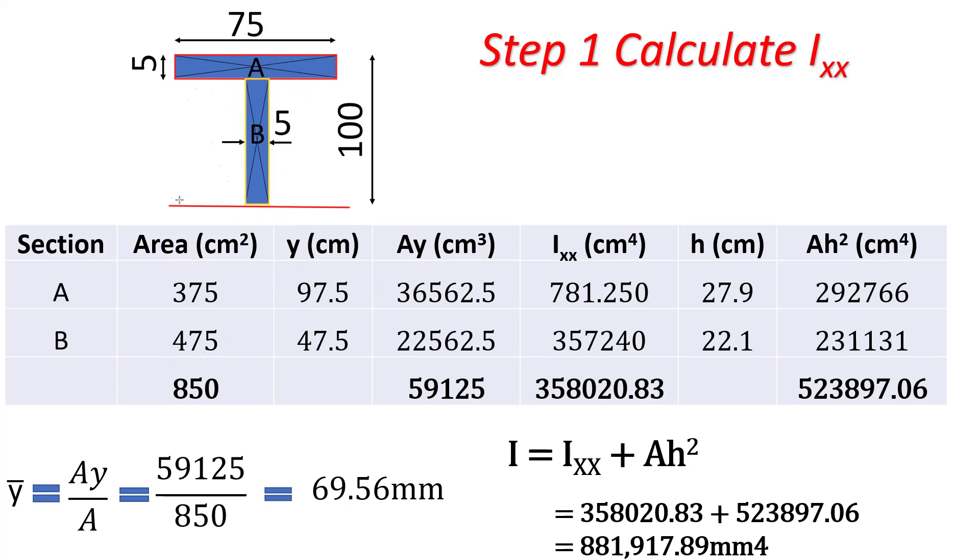Now I'm going to say this is my reference line. For A, the Y distance is from the middle of this section to there. The distance from down here to here is 95 plus half of 5, that is 2.5, and you get 97.5. Then distance from here to here, it's half of 95, and you get 47.5.